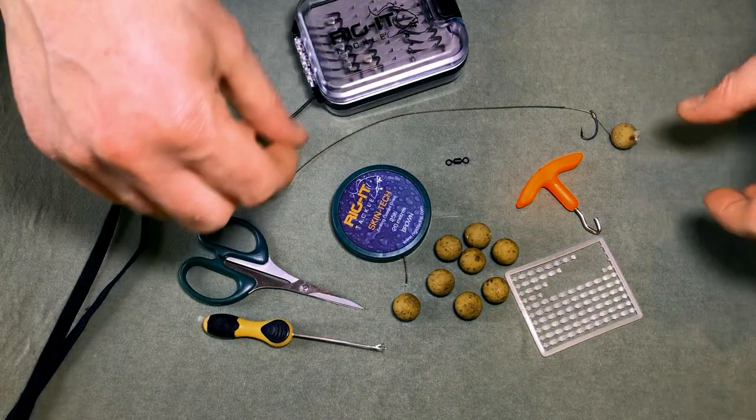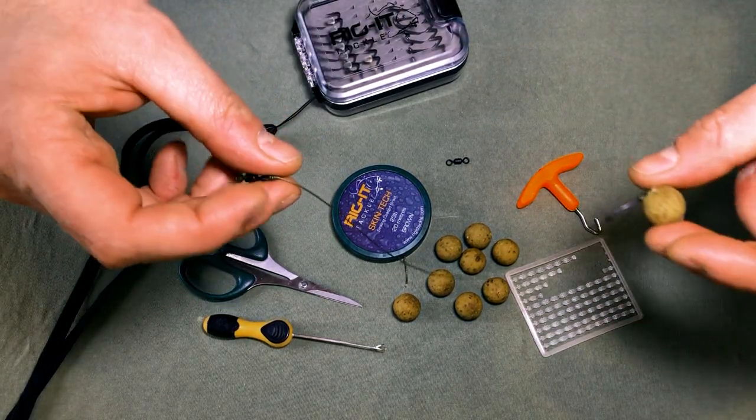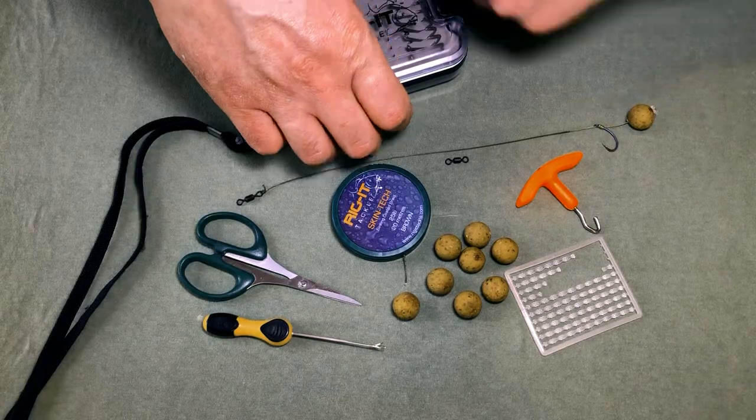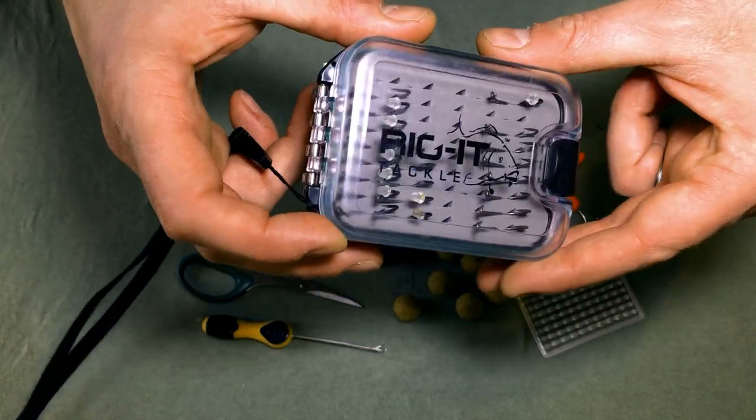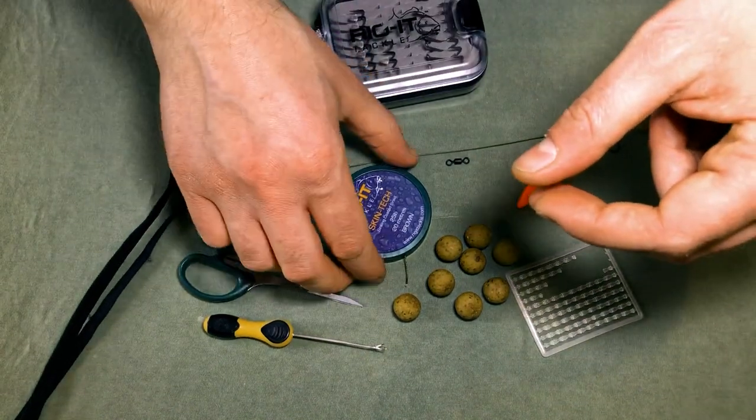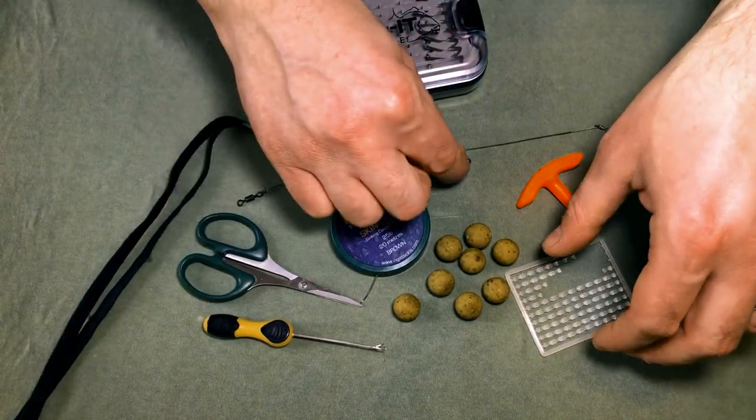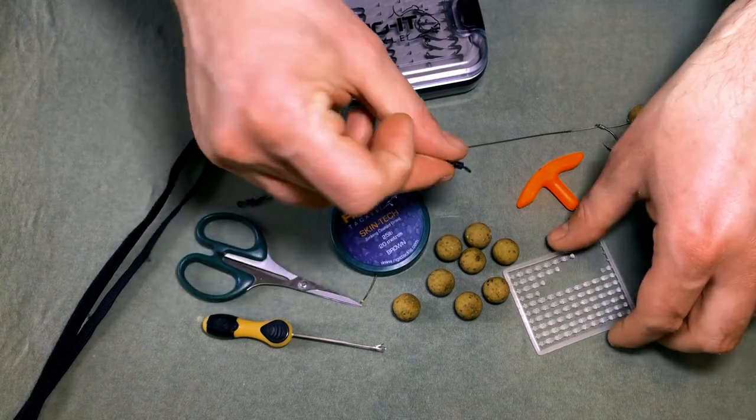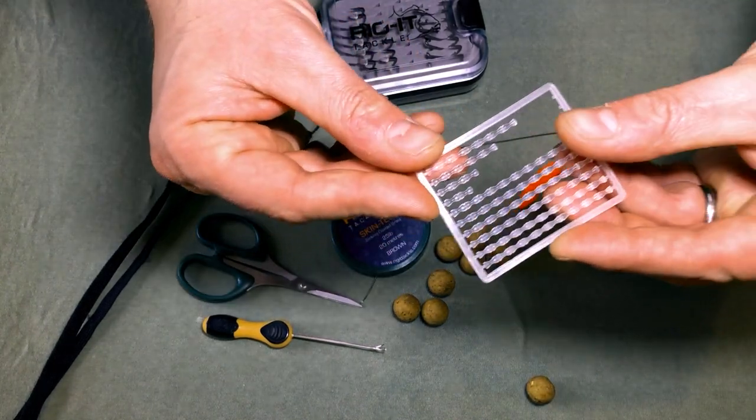For today's video I'm going to show you how to make this very basic hair rig. The key components you'll need for this video are some hooks, today I'm going to use the Rigit Tackle Curve Shanks, some coated braid, a size 8 swivel and some boilie hair stops.